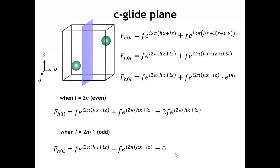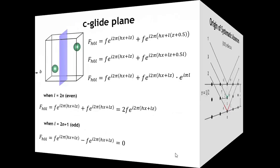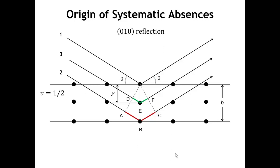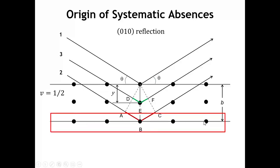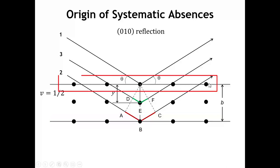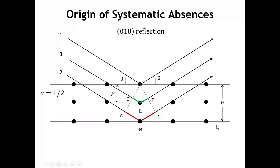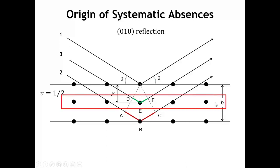We can see what's happening with the mathematics, but physically, what does it mean? Why does the structure factor go to zero? To see that, let's look at an example of our 2 sub 1 screw axis parallel to b. If we have a plane of atoms, and that plane of atoms is related to another by translational symmetry — one b lattice vector apart — then with a 2 sub 1 screw parallel to b, we get another plane of atoms halfway between the two.